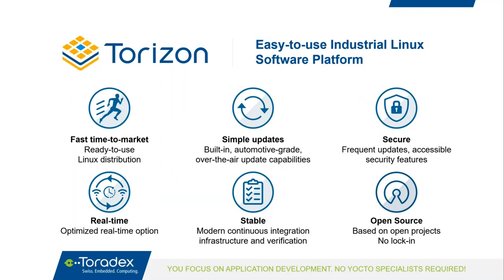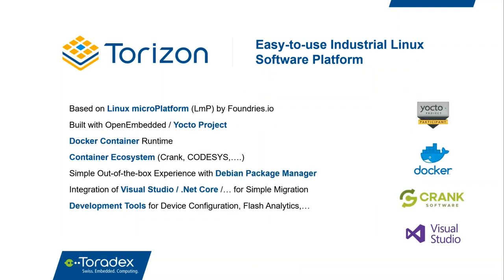Torizon is a new, easy-to-use industrial Linux platform created by Toradex. The main driving point behind Torizon is ease of use. In the context of this webinar, that means with Torizon, developers will be able to focus more on their application rather than having to deal with the underlying details of their OS. The Torizon OS is based on Linux Microplatforms by Foundries.io, another one of our partners, and is built using the Yocto project. Torizon also features a container runtime engine provided by Docker, which is a key point of this webinar.